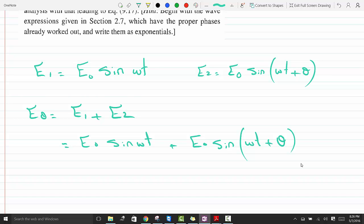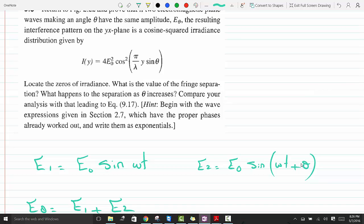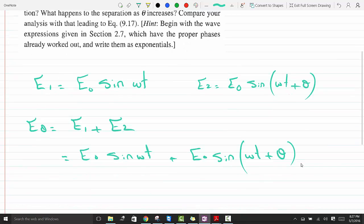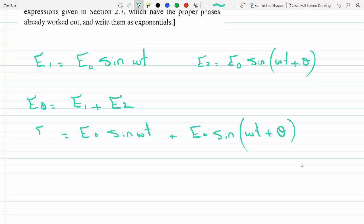So that's E0 sine omega t plus E0 sine omega t plus theta. And now we could play with some trig identities here. I'll let you attempt in order to get them to a more concise answer. After we do this, it's easy because we'll be able to relate irradiance to the electric field because the irradiance is proportional to the square of the amplitude. We know that for sure.